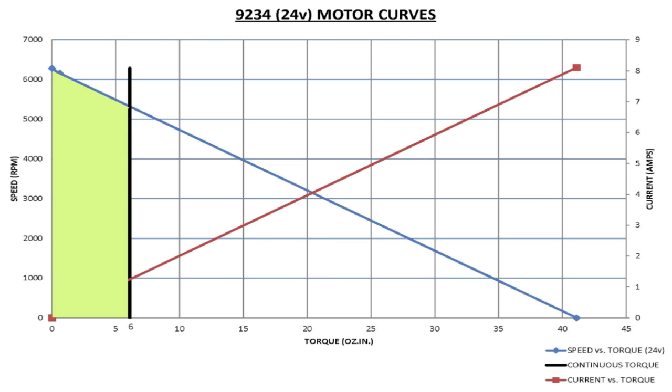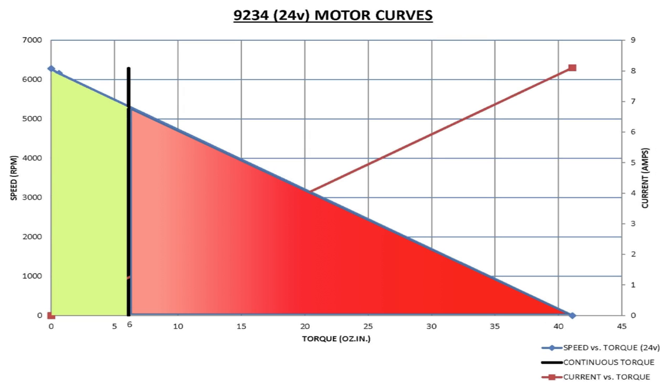Any torque loads below this value to the left of this line are allowed to exist continuously. Any torque loads above this value to the right of this line are allowed to exist only intermittently. In fact, you should talk with one of our engineers to discuss your specific application.